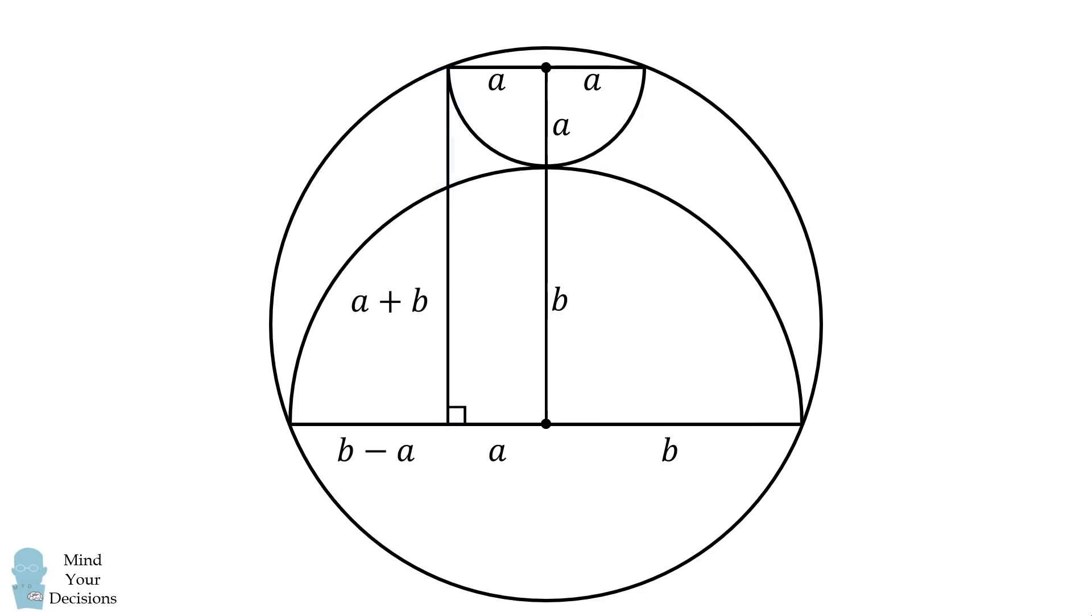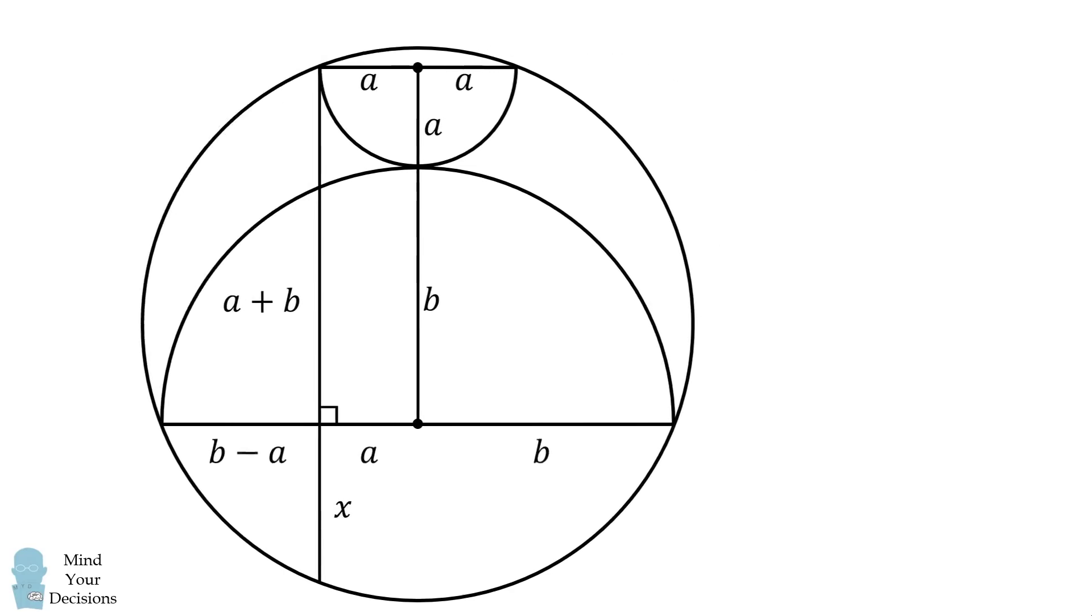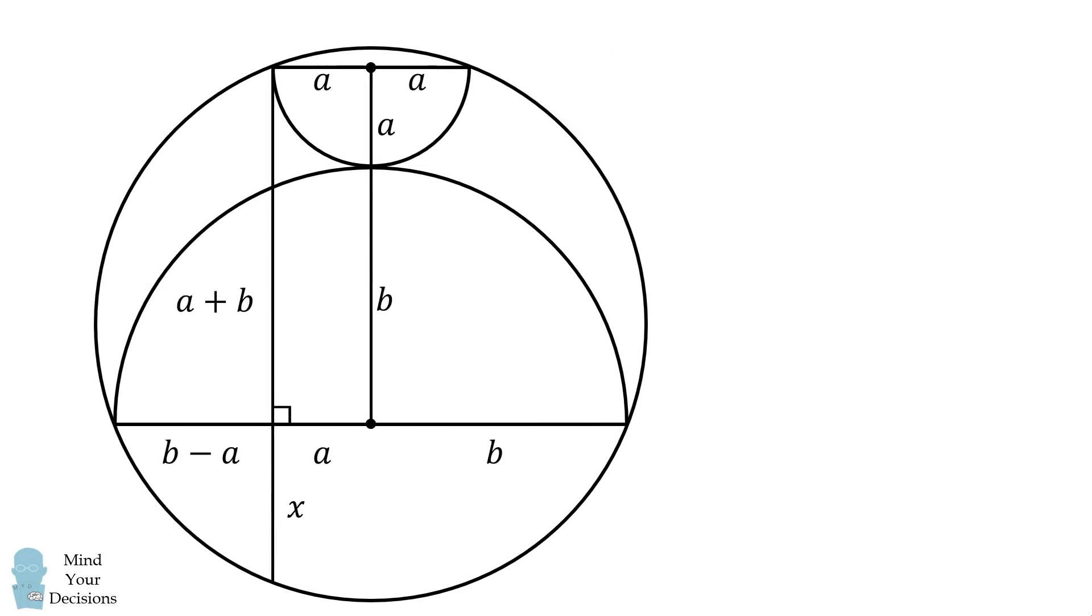From here, we will extend this side of the rectangle to be a chord of the large circle. Suppose the length here is equal to x. We can solve for the value of x by the intersecting chords theorem. We have x multiplied by a plus b is equal to b minus a multiplied by a plus b.